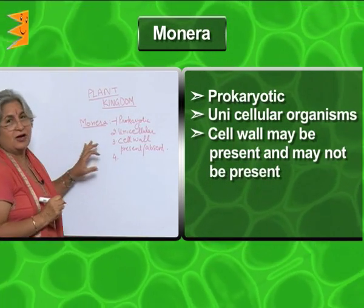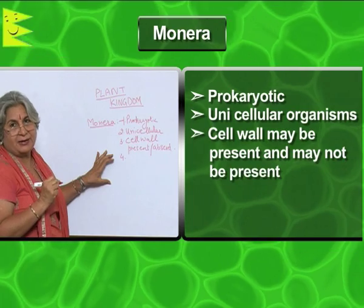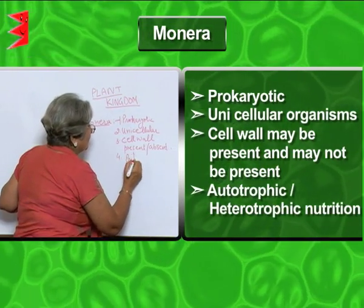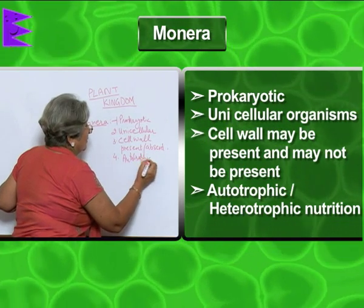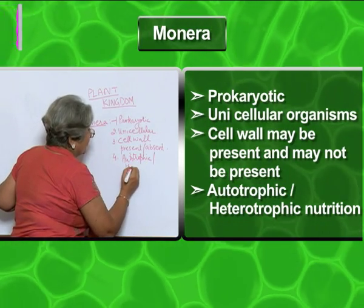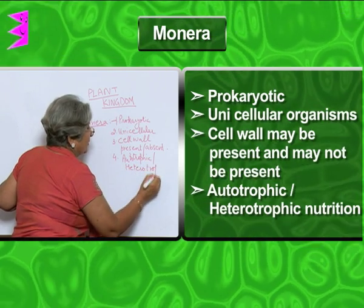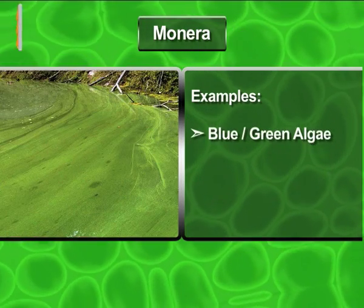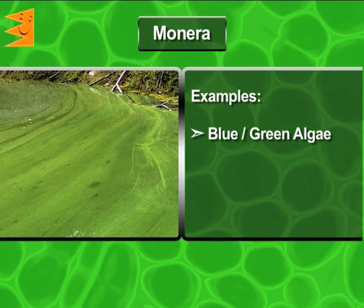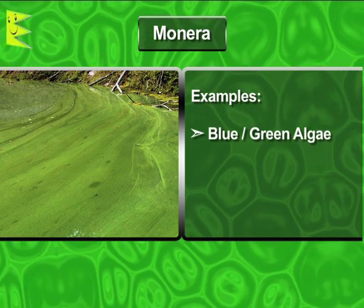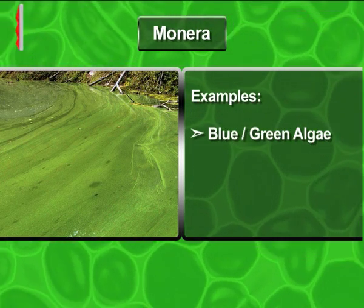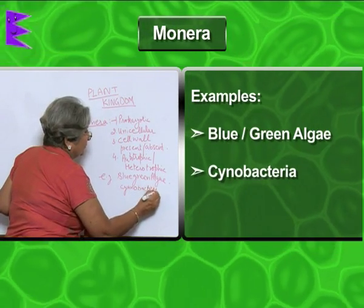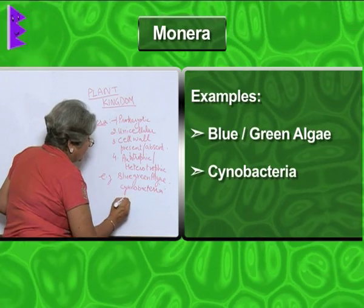Now some of these organisms can make their own food — like some bacteria can perform chemosynthesis — so they are autotrophic, or heterotrophic. The examples are blue-green algae, which are autotrophic. Blue-green algae is also called cyanobacteria, and bacteria are also included.